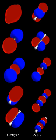When the energy difference between the atomic orbitals of two atoms is quite large, one atom's orbitals contribute almost entirely to the bonding orbitals, and the other atom's orbitals contribute almost entirely to the antibonding orbitals. Thus, the situation is effectively that one or more electrons have been transferred from one atom to the other. This is called an ionic bond.